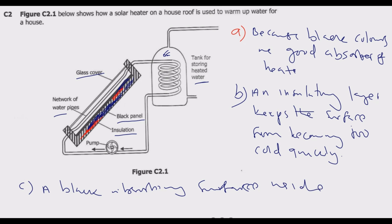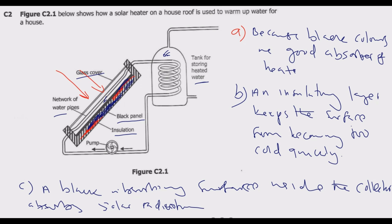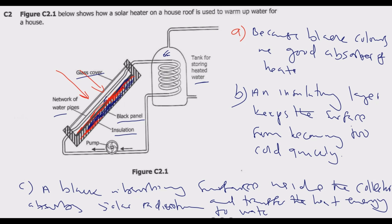The collectors inside the solar heater absorb solar radiation. When the solar radiation reaches the black surface on top, the collectors beneath collect that radiation and convert it into heat energy. The black absorbing surface inside the collectors absorbs solar radiation and transfers the heat energy to water flowing through it.